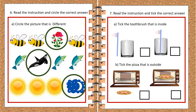Let's move on to our last activity. Tick the toothbrush that is inside the glass. The right side of the image has the brush inside the glass. Now the last question: tick the pizza that is outside. The left side of the image has pizza outside the oven.